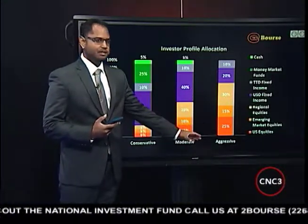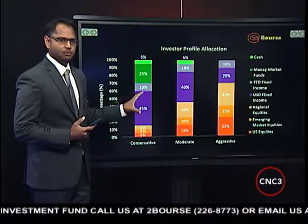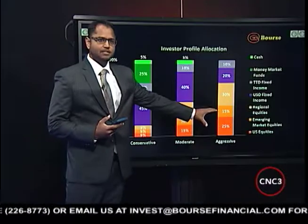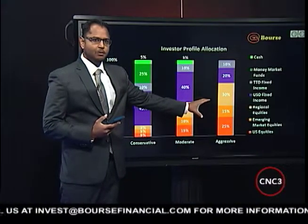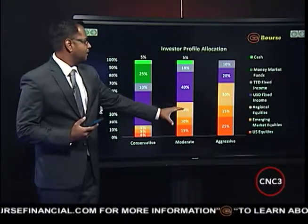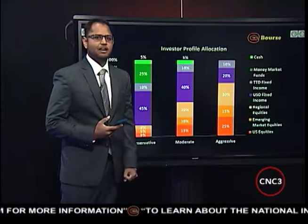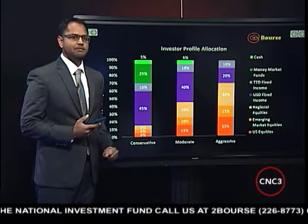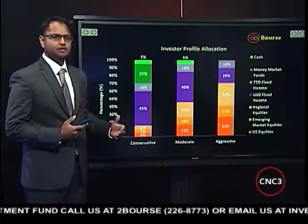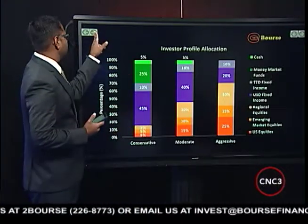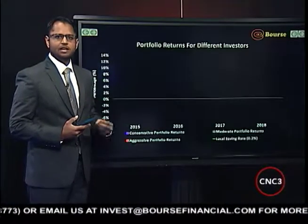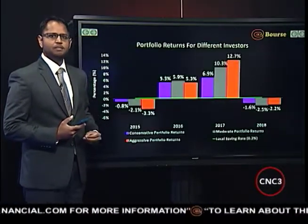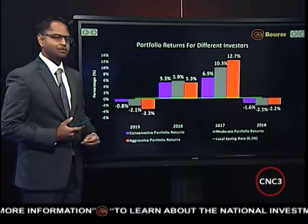The aggressive investor's allocation is much different from the conservative and moderate, with just around 70% allocated to equities — international and regional — and about 30% allocated to fixed income instruments. There's not really much to discuss for the aggressive investor in terms of money market instruments or cash. So we've seen what the portfolios look like and what the investment objectives look like. How have these portfolios fared year-to-date in 2018?